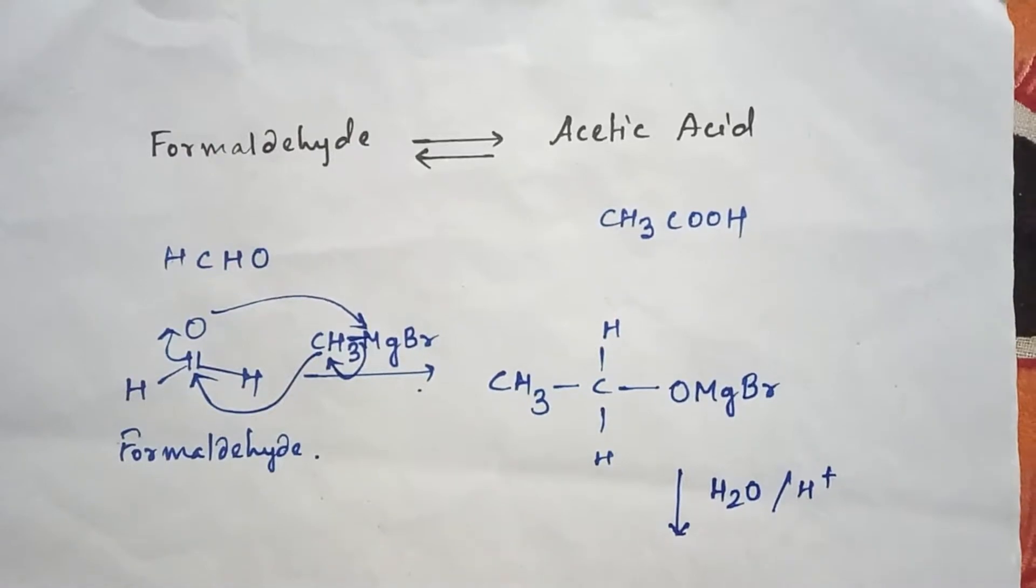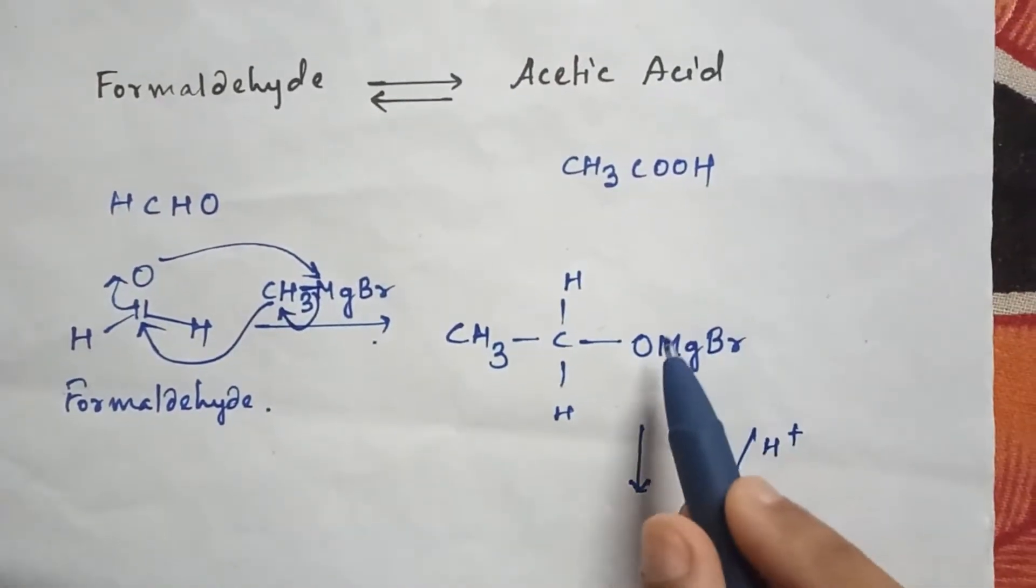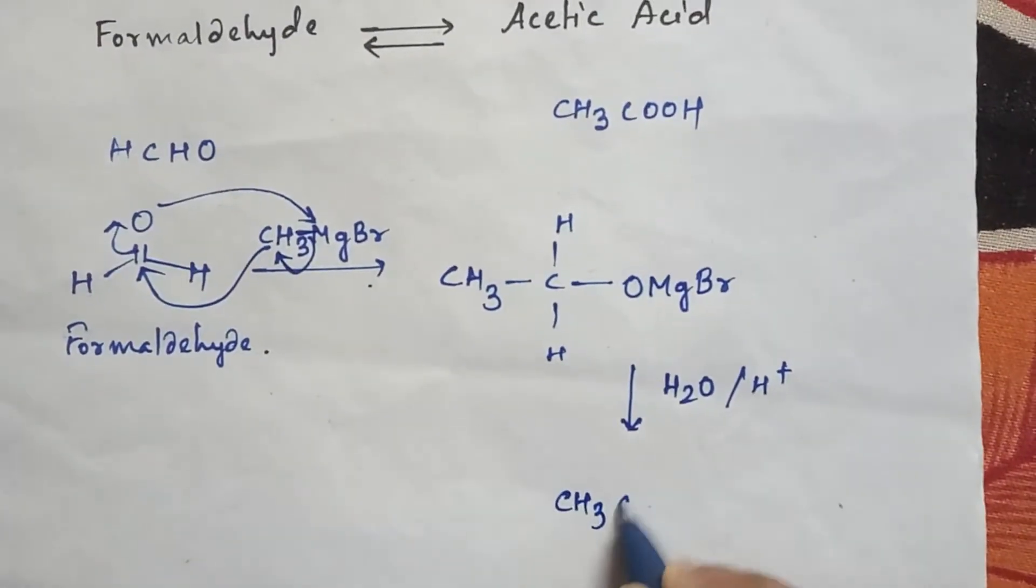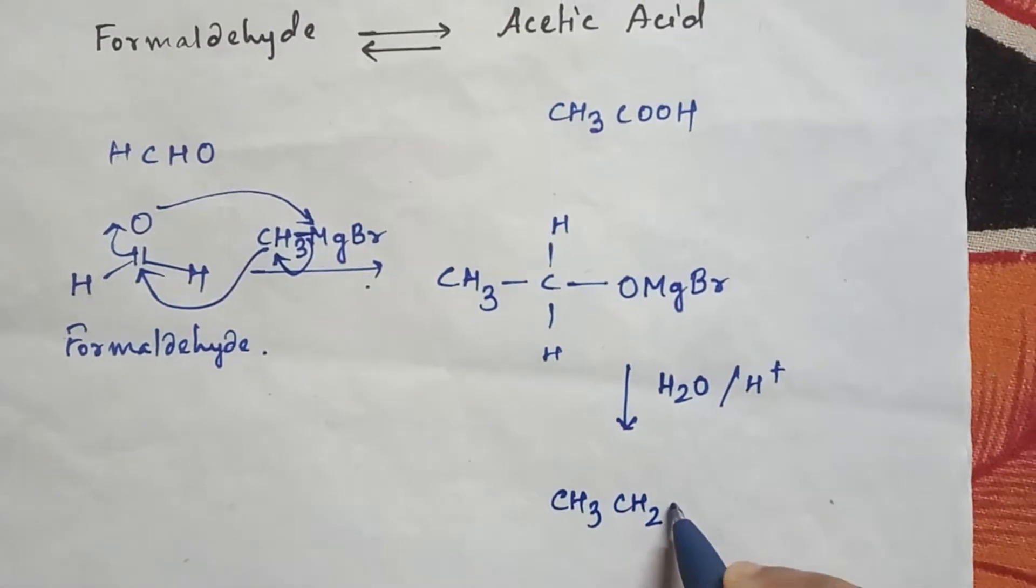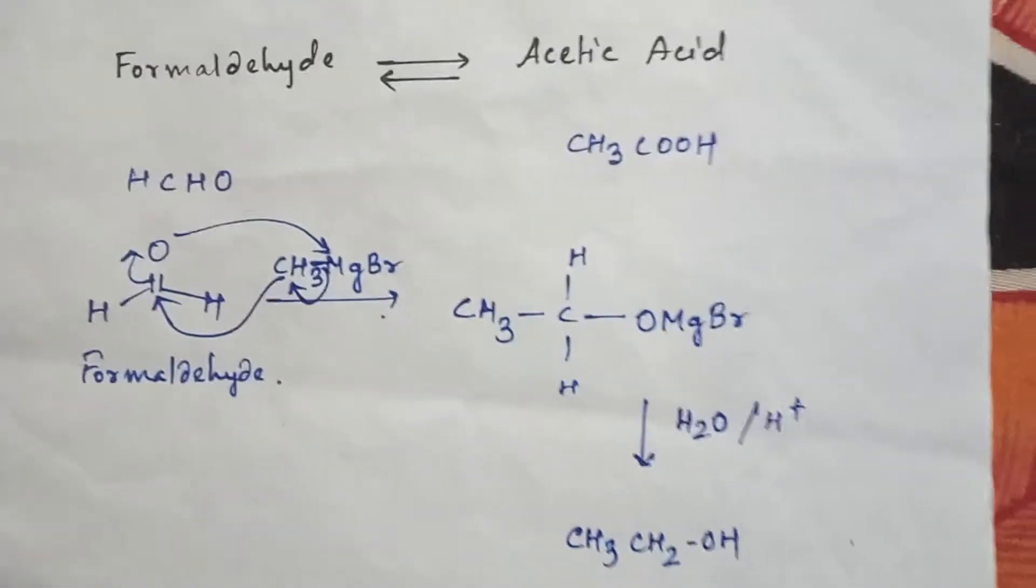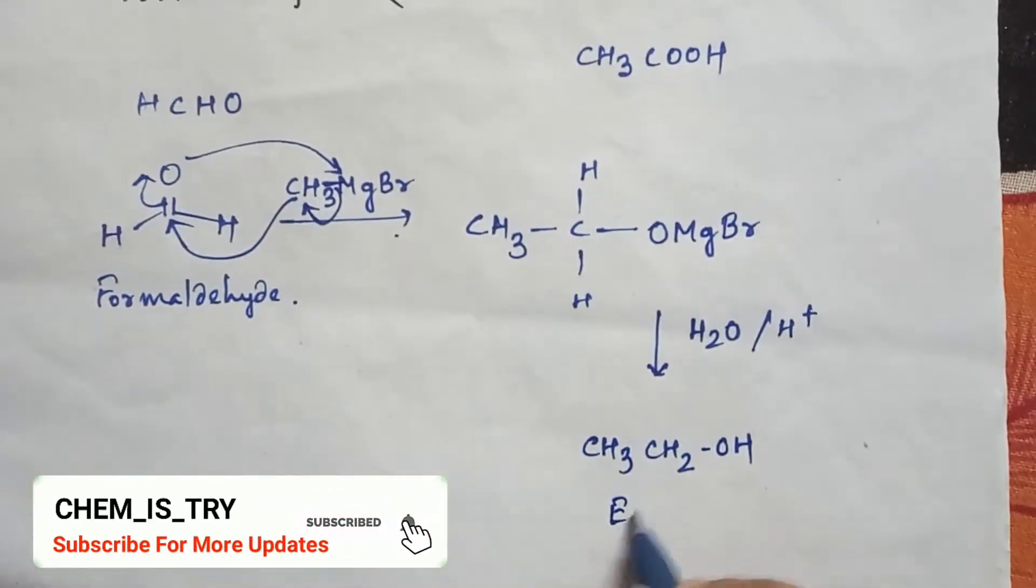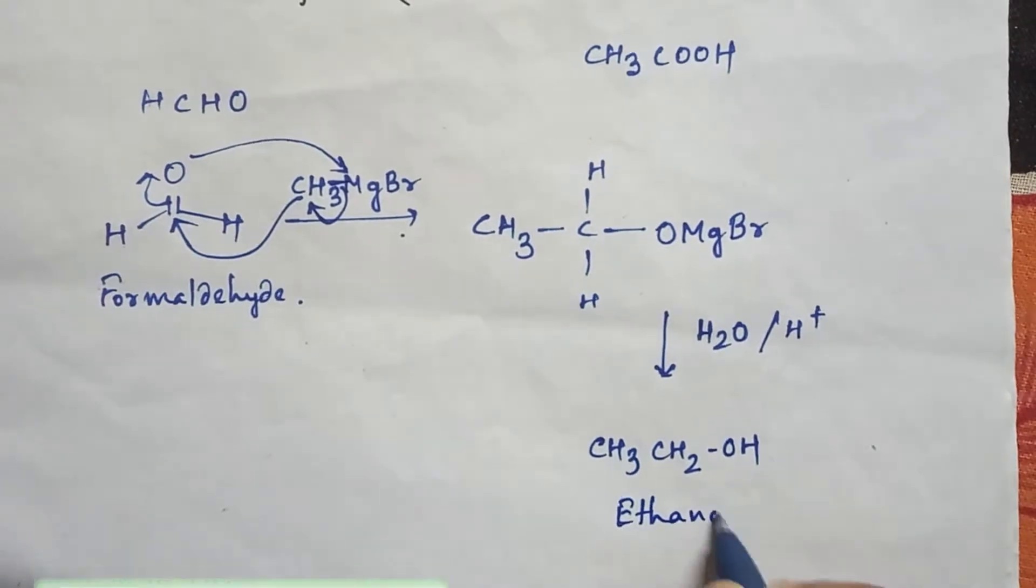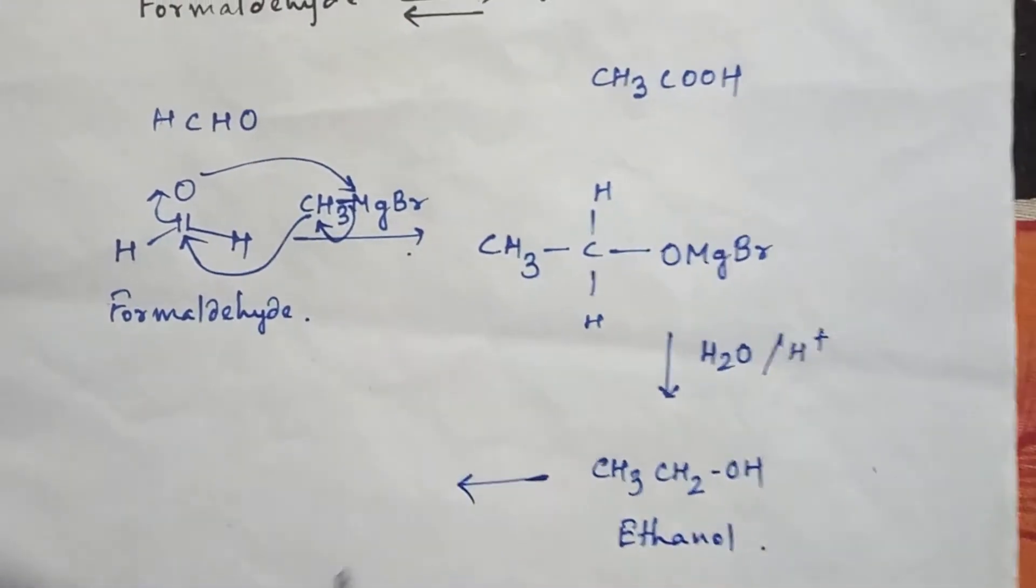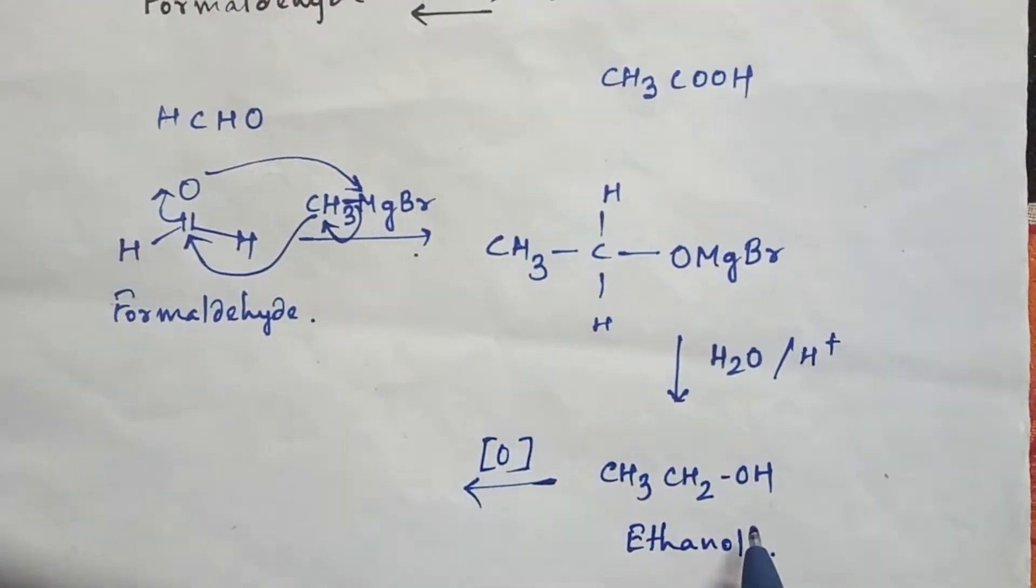This MgBr will be replaced by H+ ion and the product will be CH3CH2OH, this is ethanol. Now in this ethanol if you do oxidation, then alcohol will convert into acid.